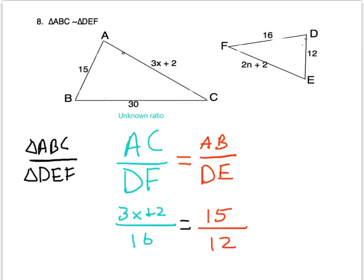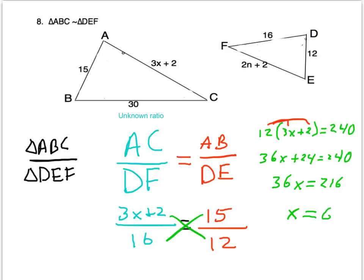So now we need to cross multiply. 12 times the quantity 3x plus 2 is equal to 15 times 16, which is 240. The first thing to do to solve that will be to distribute 12, then subtract 24 from both sides, and then divide by 36 on both sides, and we get that x is equal to 6. So now we've found x.